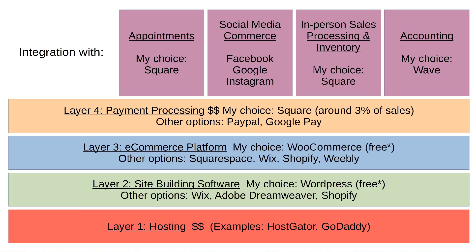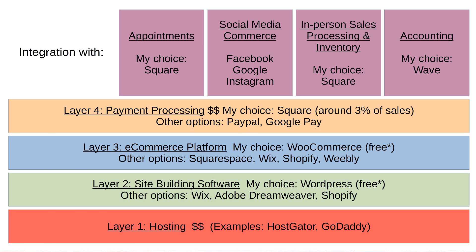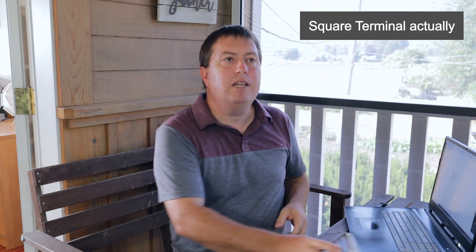You can set up your item and tell it how many you have in stock. You'll see the term 'Square' here — Square is my payment processor. So layering it out: bottom layer is hosting, second layer is site-building software which is WordPress, third layer is the e-commerce platform which is WooCommerce, and the fourth layer is Square, my payment processor. I used to use PayPal — Square is very similar in fees, both around 3% of your transaction.